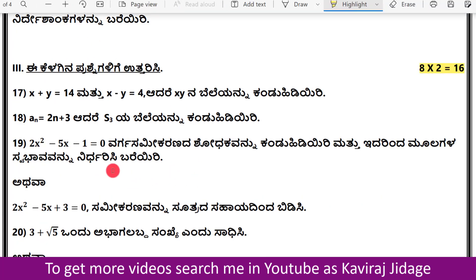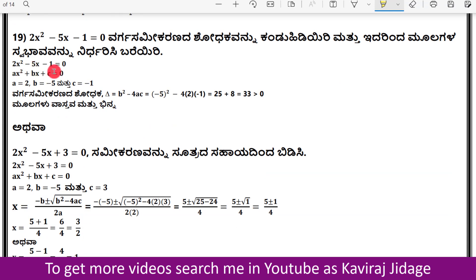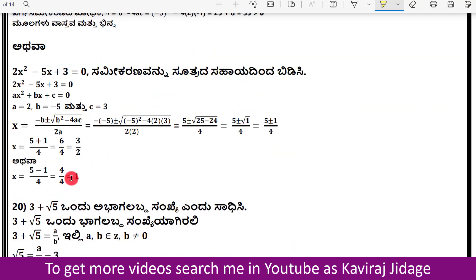Question 7: For 2x² − 5x − 1 = 0, find the discriminant and nature of roots. Comparing with ax² + bx + c = 0: a = 2, b = −5, c = −1. Discriminant Δ = b² − 4ac = (−5)² − 4(2)(−1) = 25 + 8 = 33. Since Δ > 0, the roots are real and distinct. A related choice question uses 2x² − 5x + 3 = 0; pause the video to note the steps.